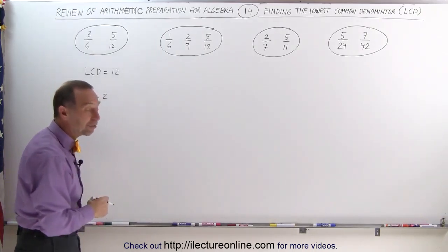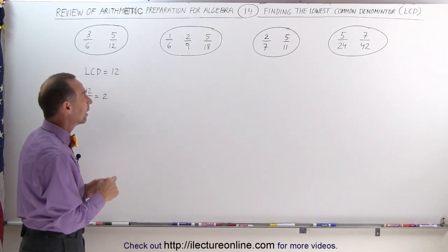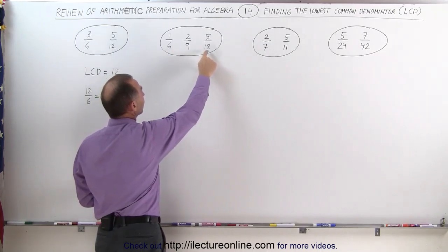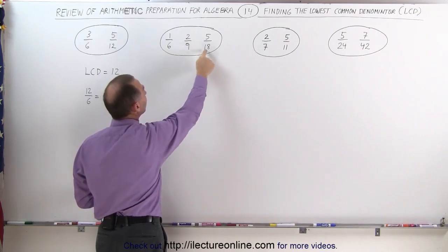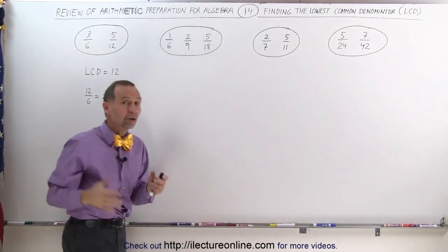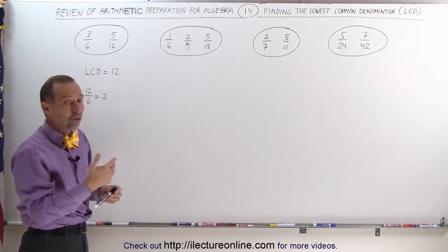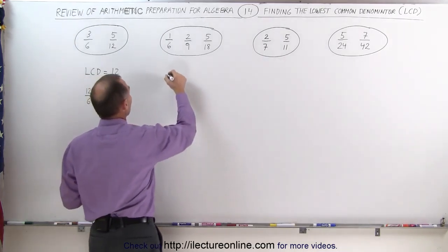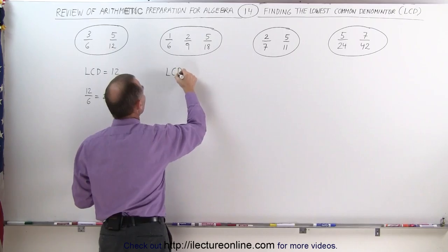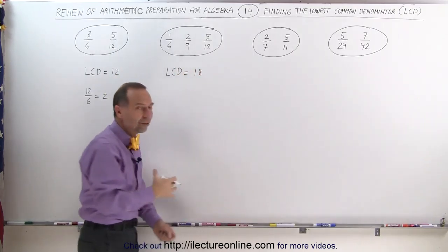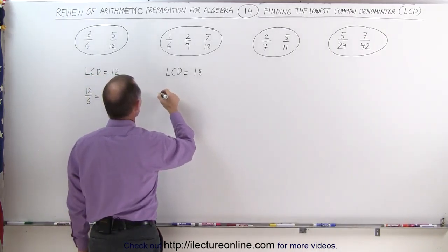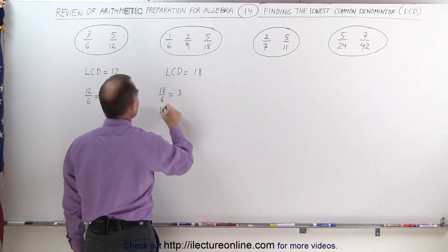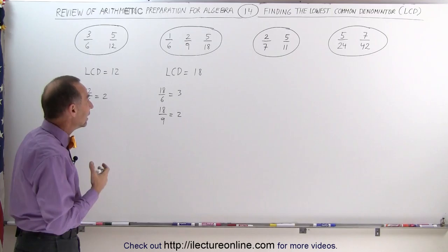Looking at the next set, we have a similar situation. Even though there are three fractions, notice that the largest of the three denominators is 18, and the other two fit evenly into it: 6 fits evenly into 18, and 9 fits evenly into 18. This means the largest of the three denominators becomes the LCD. In this case, the LCD is equal to 18. To check: 18 divided by 6 equals 3, and 18 divided by 9 equals 2 — both integers — which verifies that 18 is the LCD.